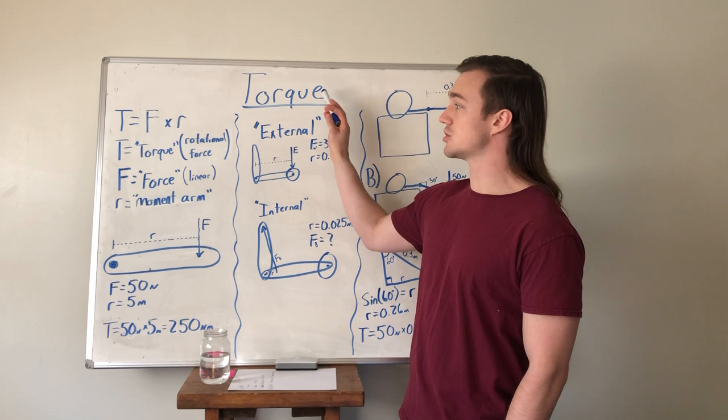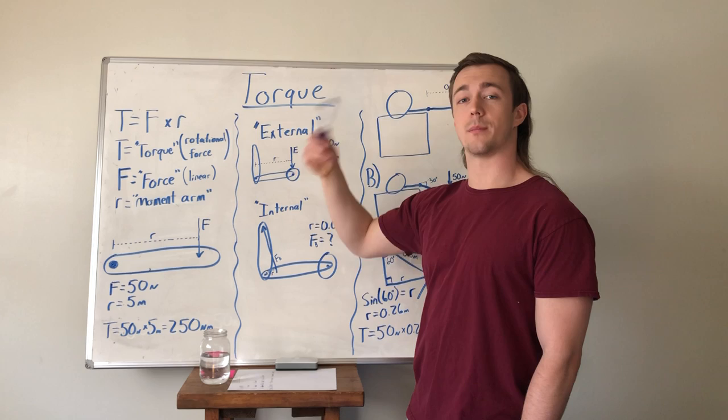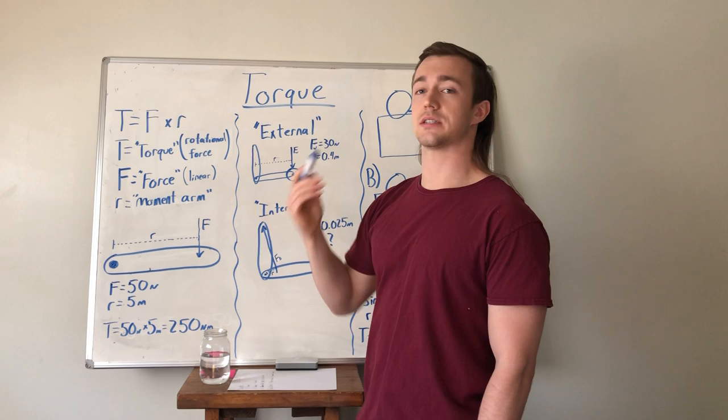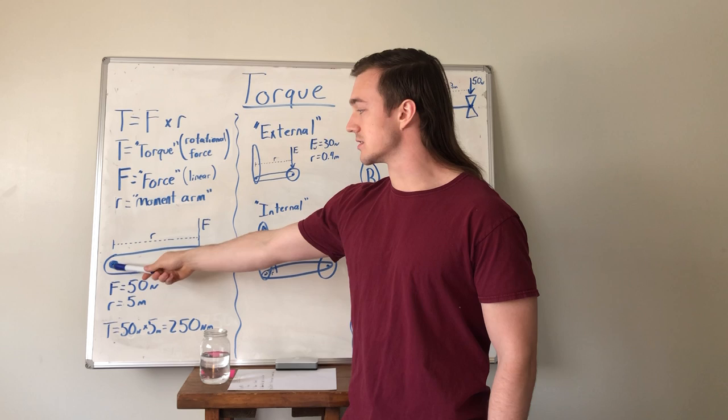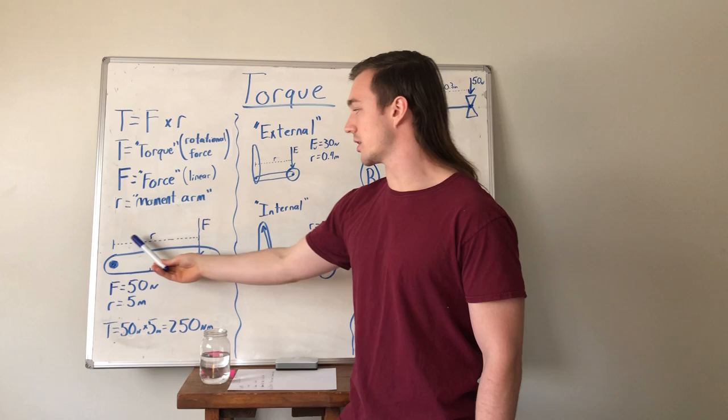So we talked about torque a little bit already, knowing that it's a rotational force. Our equation here, T stands for torque, which is our force about an axis or a turning force, is equal to the force, so this is like the application force, which is a linear force, times R, which stands for the moment arm. Specifically, the moment arm is the perpendicular distance from the force to the axis of rotation. So if we look at this example here, we have our axis of rotation, our applied force, and then perpendicular off of the line of force is going to make our moment arm. So perpendicular, straight across, that distance is our moment arm.